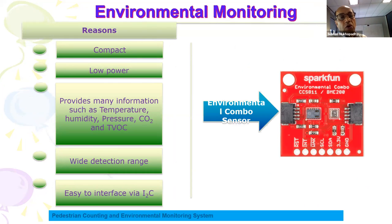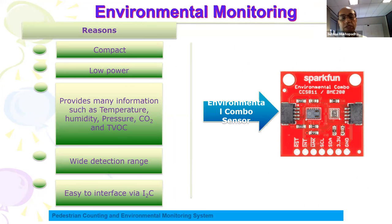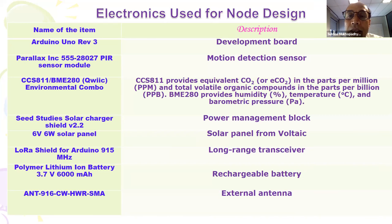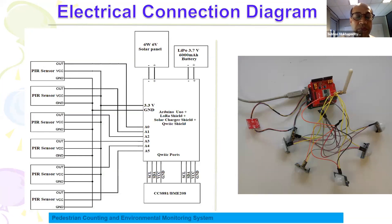We have an environmental combo sensor where we can get many parameters such as temperature, humidity, pressure, carbon dioxide, and total volatile organic compound. This combo provides I2C interface for easy connection to the microcontroller. The electronics needed are: Arduino, PIR sensor combo, and everything based on a solar panel. We have a rechargeable battery inside — a 6000 milliampere-hour battery selected so that if there is no sunlight for a week, the system will still work. We use a solar panel that is sufficient to charge the battery and provide power for normal operation. We also need an antenna for transmitting the data.